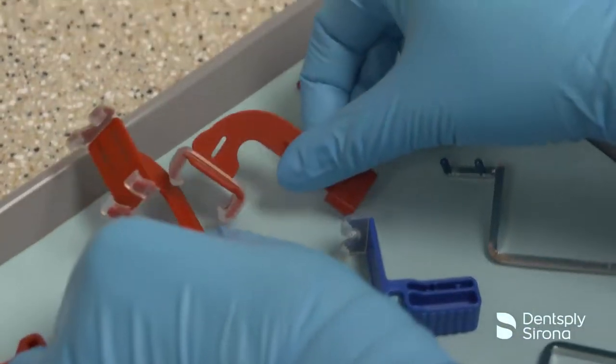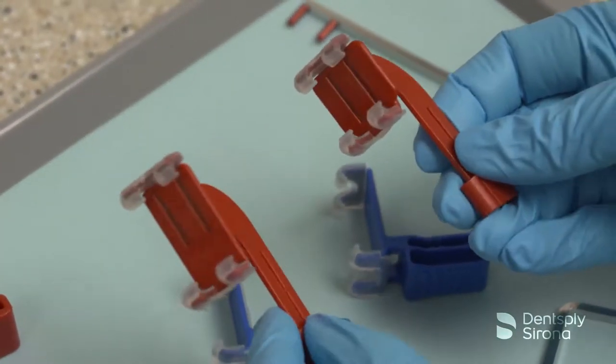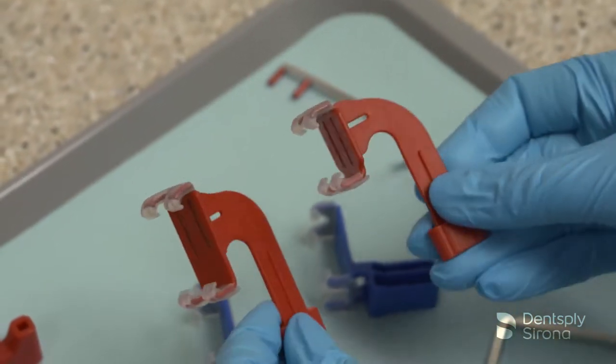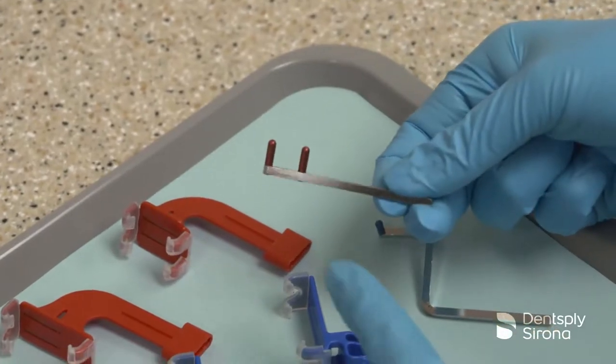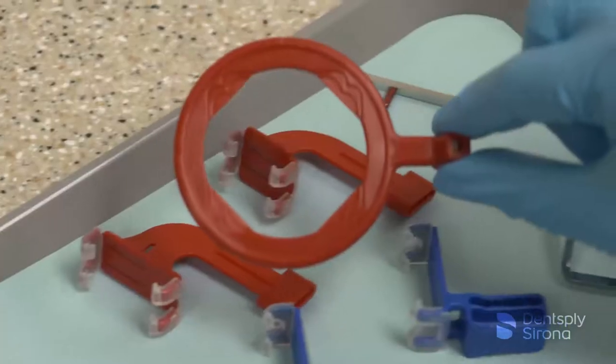The red bite block is used for bitewing radiographs and is available in a horizontal or vertical orientation and corresponds with the metal arm with the red pegs and the red ring.